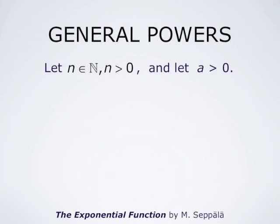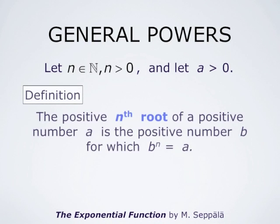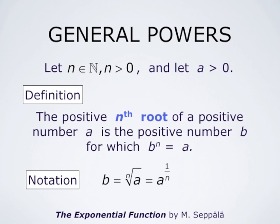Let n be a positive integer and a a positive number. We define the nth root of the positive number a as the positive number b for which b to the power n equals a. This defines the positive nth root uniquely, and the notation for this is that b is the nth root of a, or a to the power 1 over n.